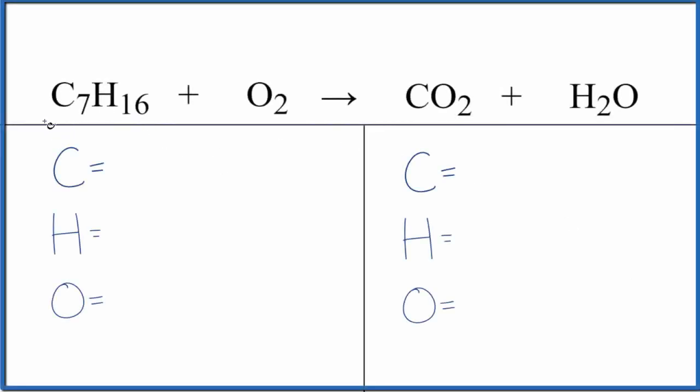Let's balance the equation C7H16 plus O2. This is probably heptane, although it could be another isomer of C7H16. And then we have oxygen gas. This is considered a combustion reaction. We have a hydrocarbon and oxygen gas, O2, and we end up with carbon dioxide and water. So the type of reaction is combustion.